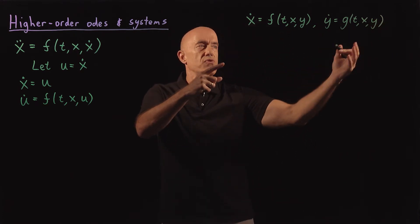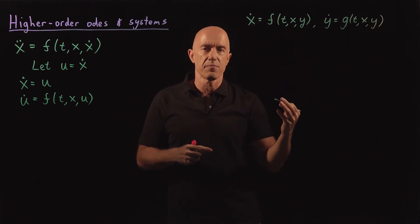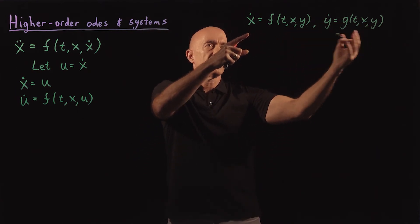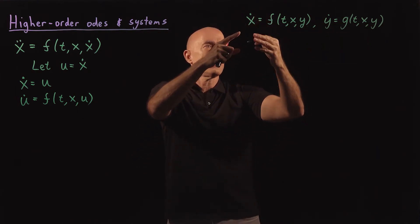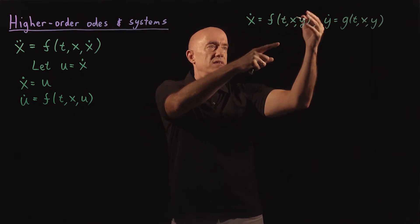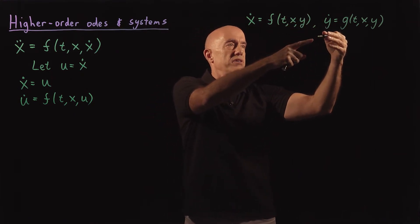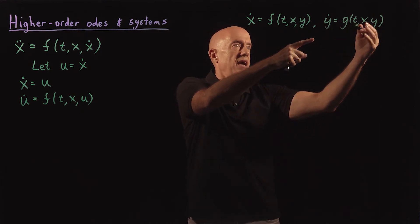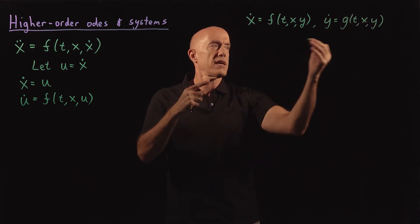And y dot equals g of t, x, and y. So this is a more general form of a system of two coupled first-order equations. We have an equation for dx dt that depends on t, x, and y, and an equation for dy dt that also depends on t, x, and y. So we can integrate that.